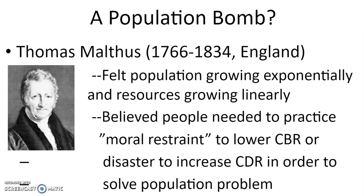Thomas Malthus said there was going to be a population bomb. He lived in England from 1766 to 1834, when the Industrial Revolution began — the introduction of machines to manufacturing, agriculture, and other areas of life — which created better sanitation and hygiene, leading to a decline in crude death rates and an explosion in the natural increase rate, pushing England into Stage 2 of the demographic transition first.